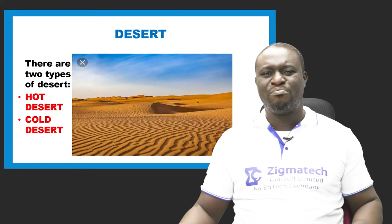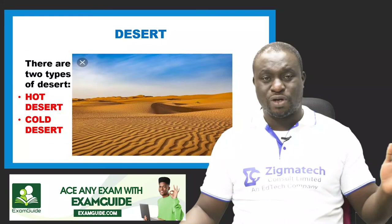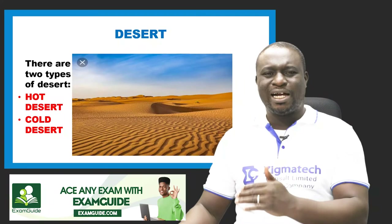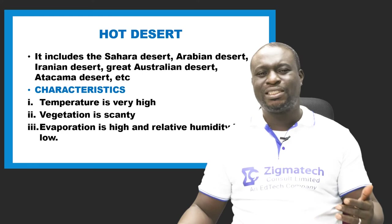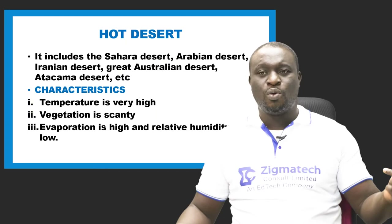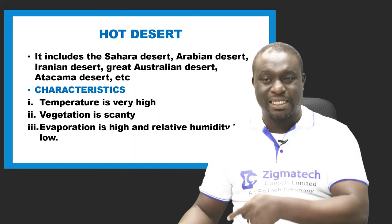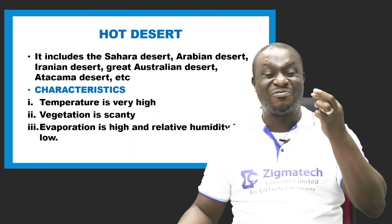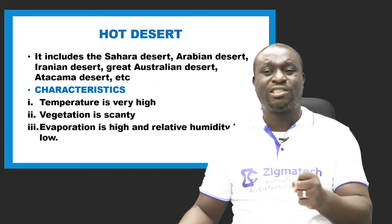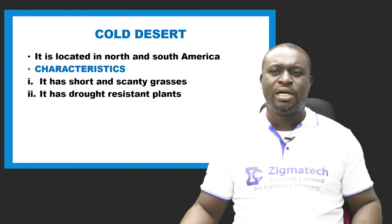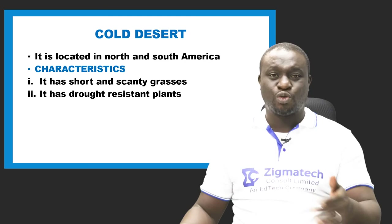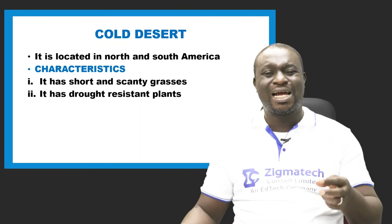There are two types of deserts: hot deserts and cold deserts. Hot deserts — such as the Sahara, Arabian, and Iranian deserts — are characterized by very high temperatures, scanty vegetation, high evaporation, and very low relative humidity. Cold deserts are mostly located in North and South America and are characterized by short and scanty grasses and drought-resistant plants.